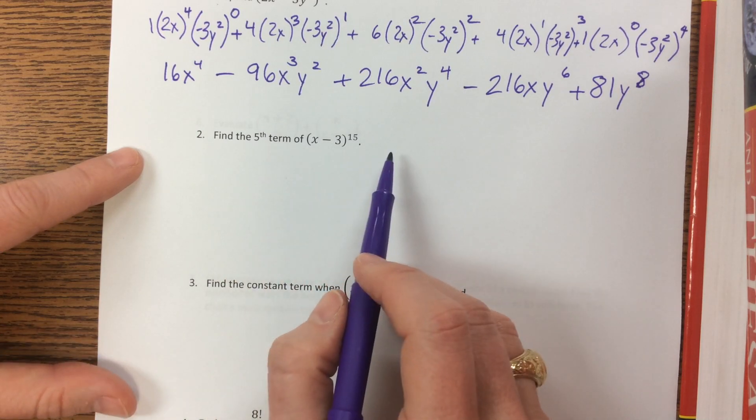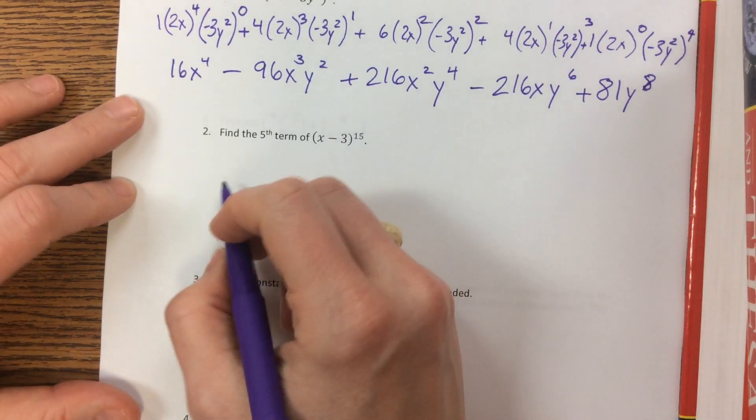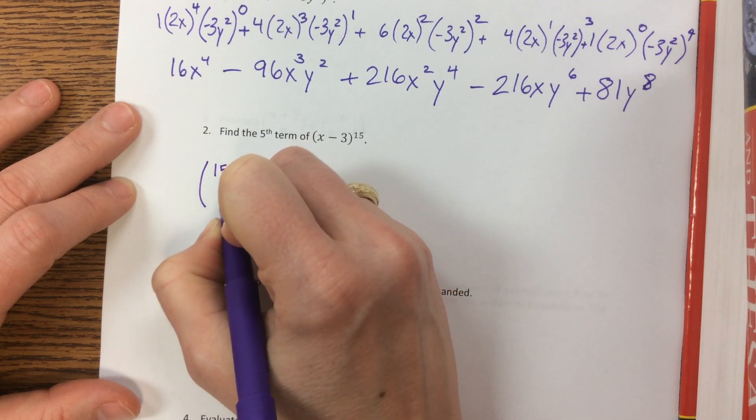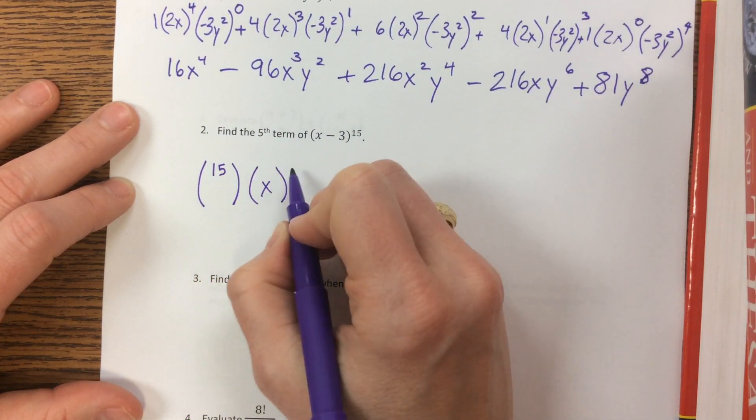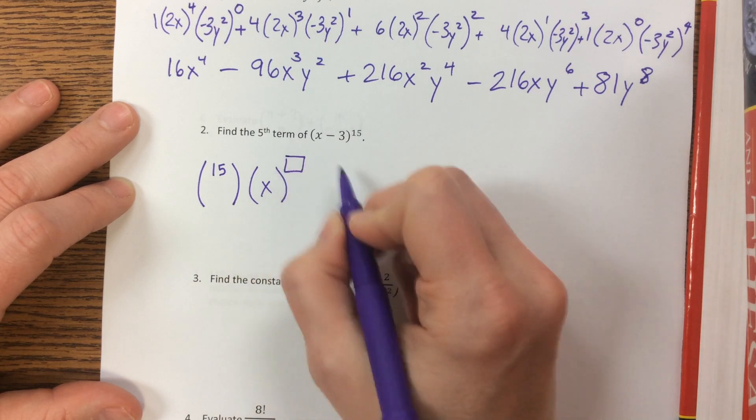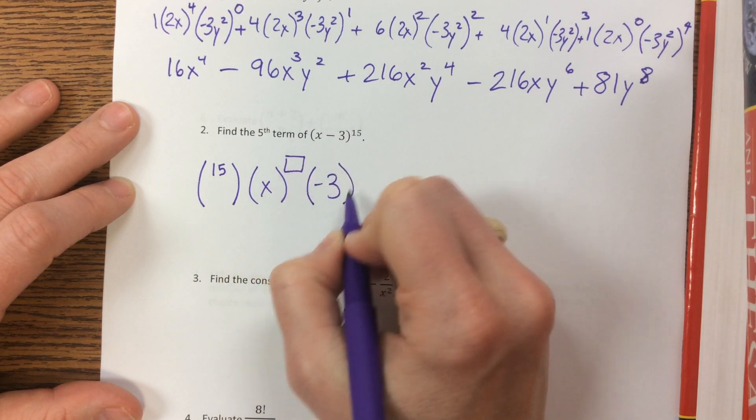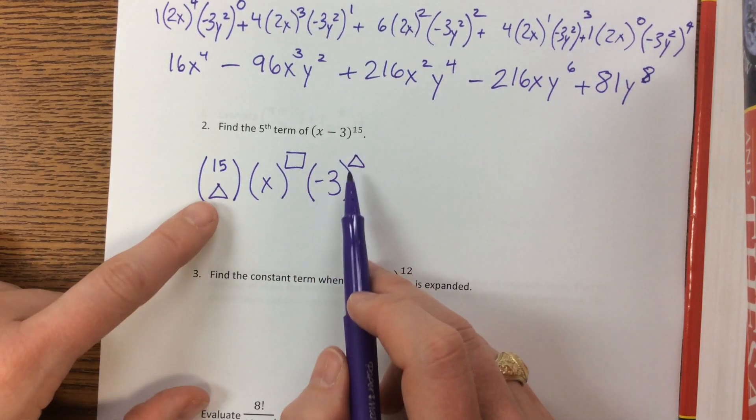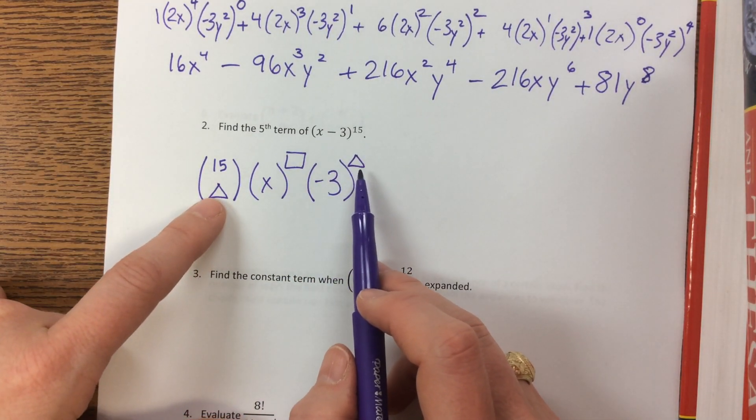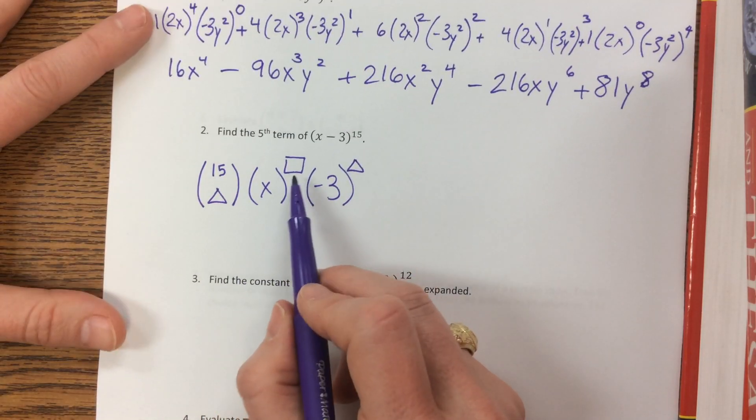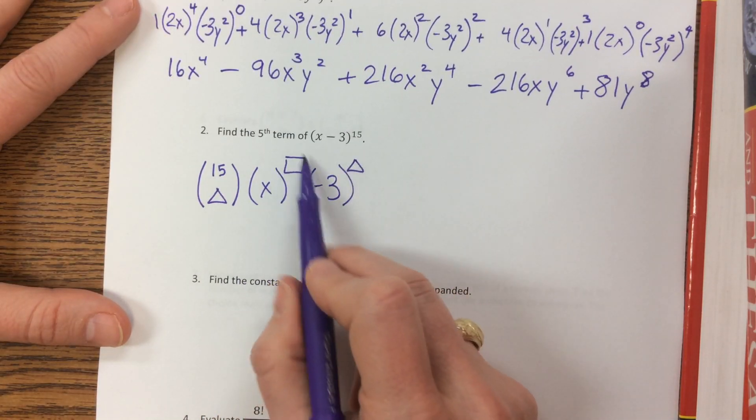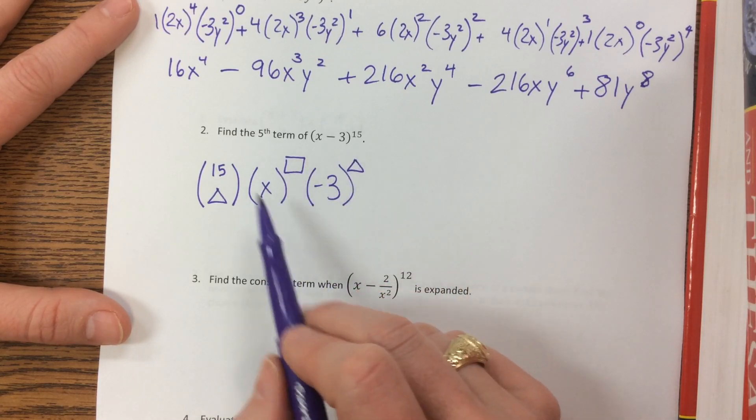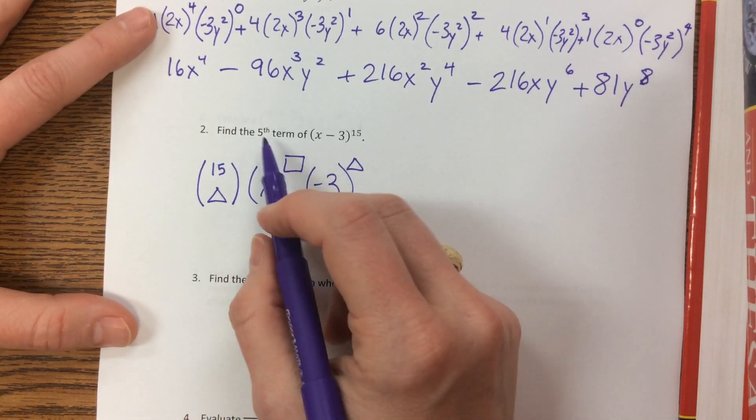Okay, so the next one they say, find the 5th term of this. Oh my goodness. So if you remember, each term has a combination. So it's going to be 15 choose something. And then we have our x gets raised to a power. And then we have our negative 3 that gets raised to, well, this and this. These two are going to be the same, if you remember from expanding before. And then these two, the box and the square, sorry, the box and the triangle add up to 15.